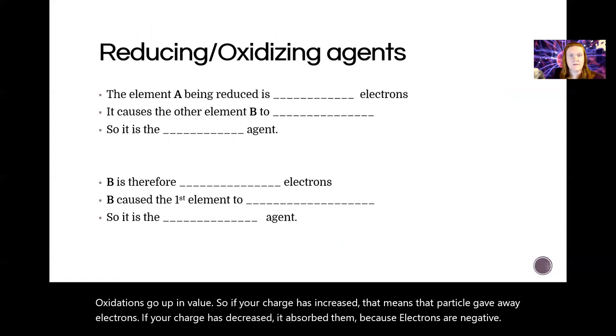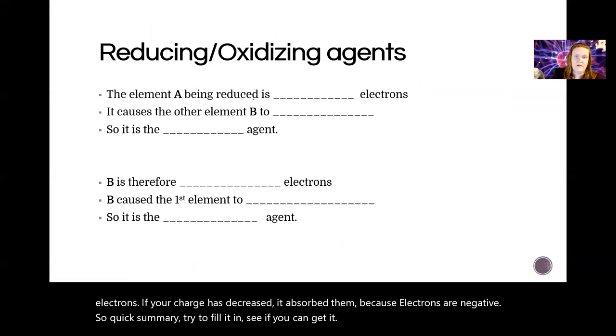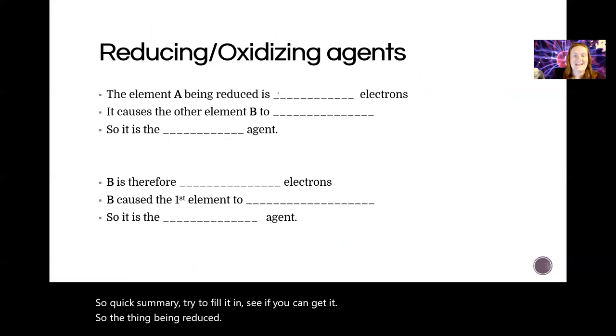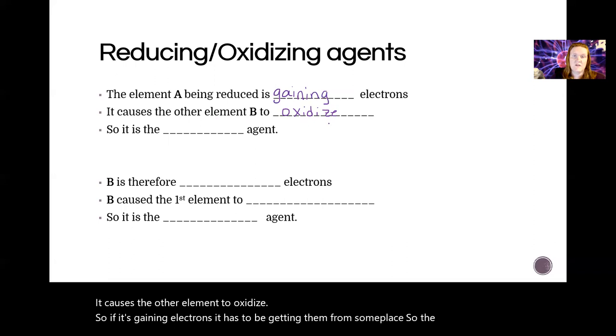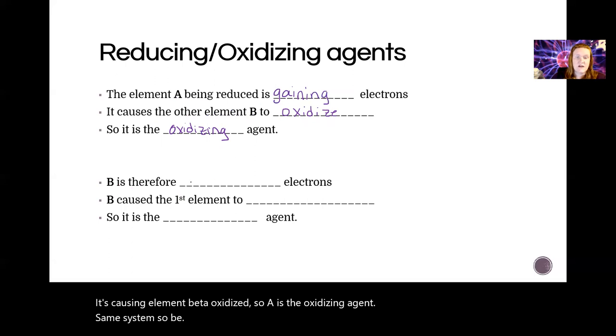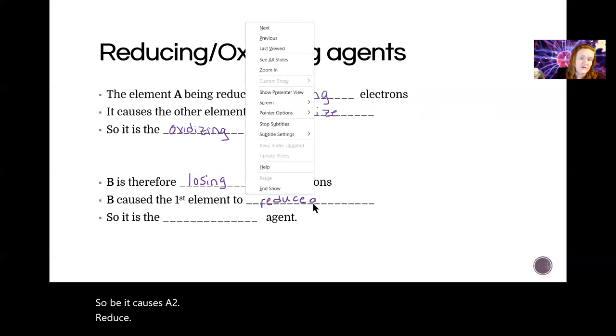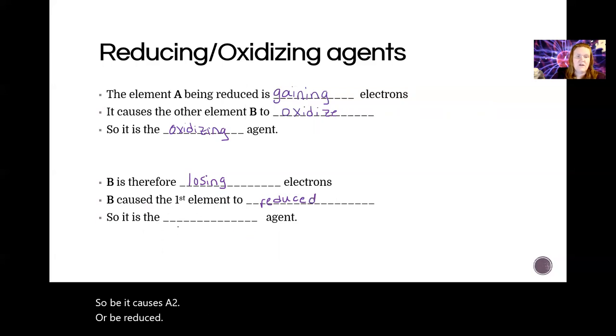So quick summary - try to fill it in and see if you can get it. The thing being reduced is gaining electrons - reduction is gain. It causes the other element to oxidize. So if it's gaining electrons, it has to be getting them from some place, so the other element is the thing giving them off. So A is causing element B to oxidize, so A is the oxidizing agent. Same system: B is the one being oxidized, which means it is losing electrons, so B causes A to reduce or be reduced. So it is the reducing agent.